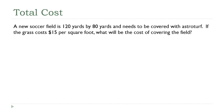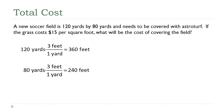There are three feet per yard. Using our dimensional analysis approach, I'm going to take 120 yards and multiply that by three feet per yard, and that becomes 360 feet. I'm going to do the same thing with the other value: 80 yards multiplied by three feet per yard gives us 240 feet.